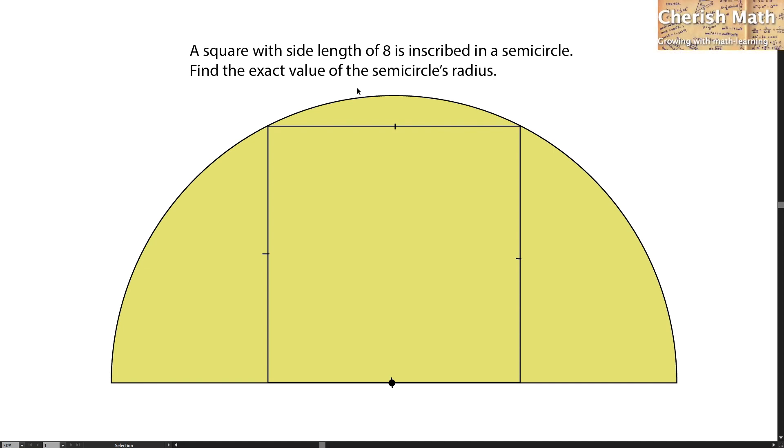Say hi from Cherish Math. Here's the problem. A square with a side length of 8 is inscribed in a semicircle. Find the exact value of the semicircle's radius.